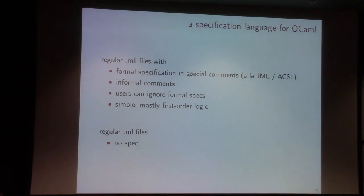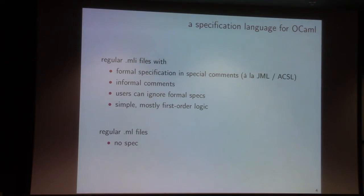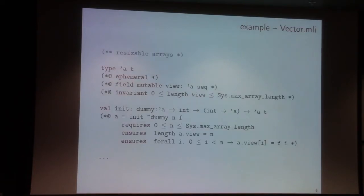We chose to write most of our specification elements in first-order logic, because we believe it's normally easier for a human to understand, but there are still some elements of higher-order logic. From the implementation side, the .ml files include the regular code — no proof elements, no specification — just regular .ml files.